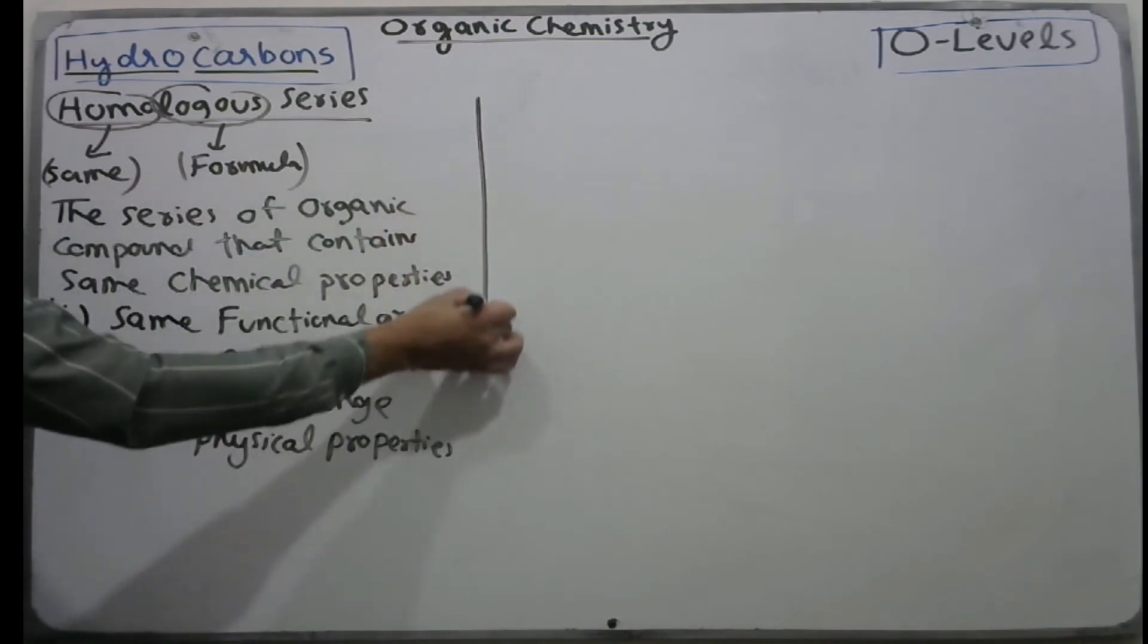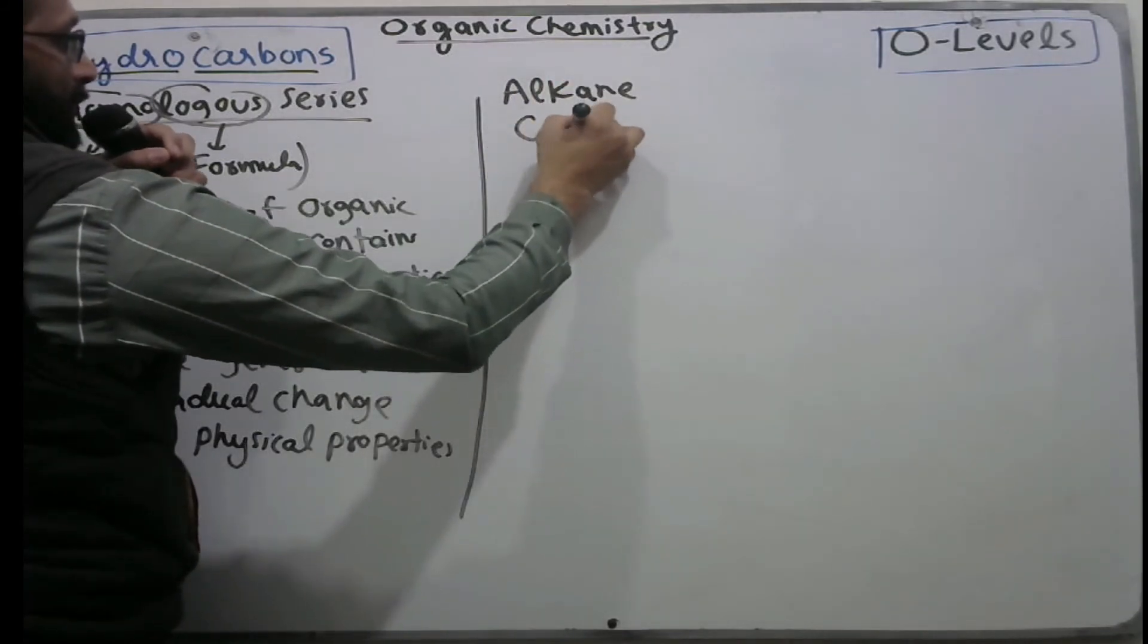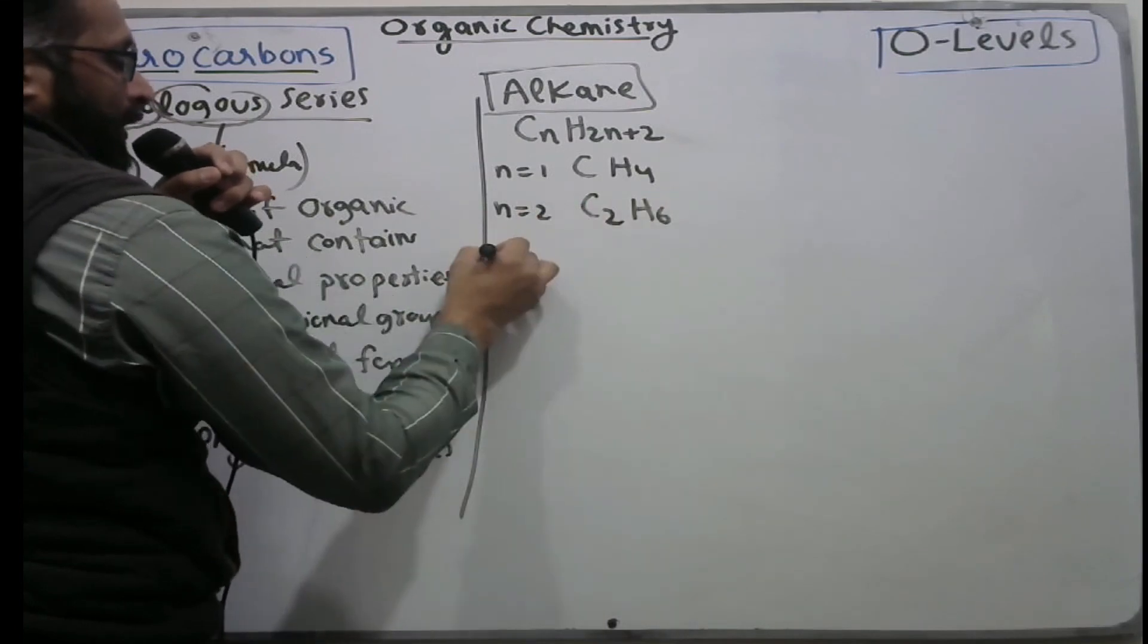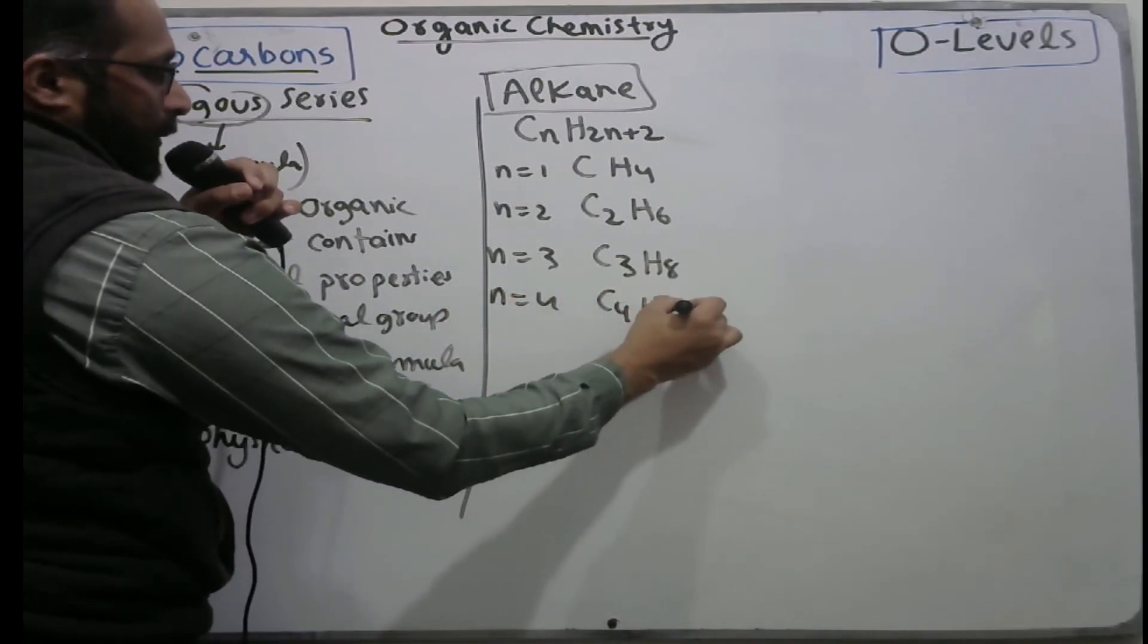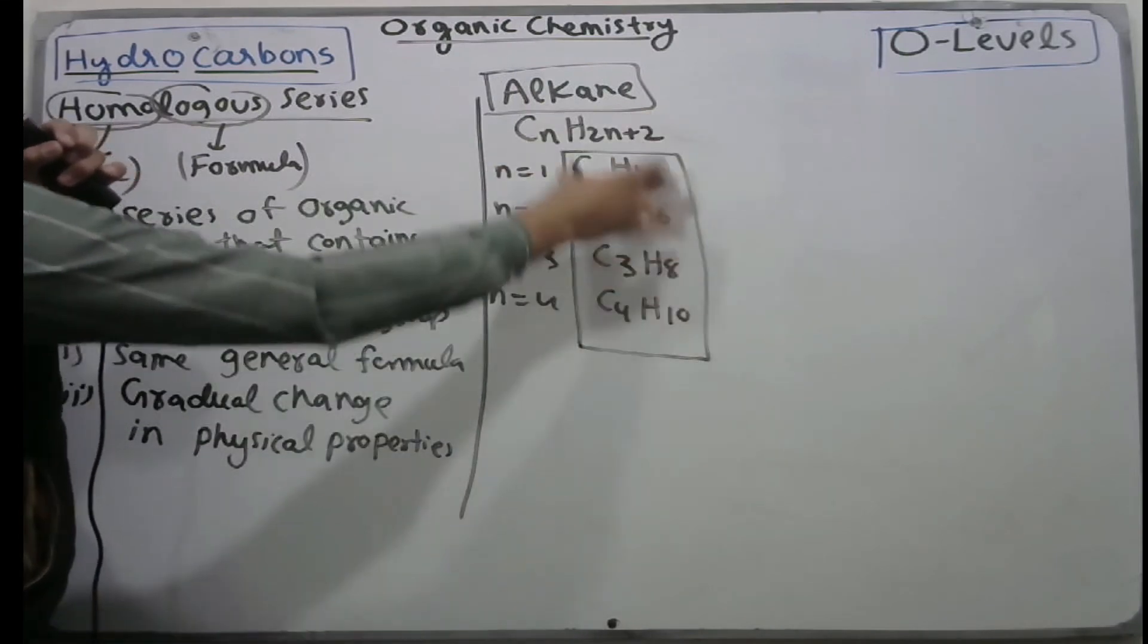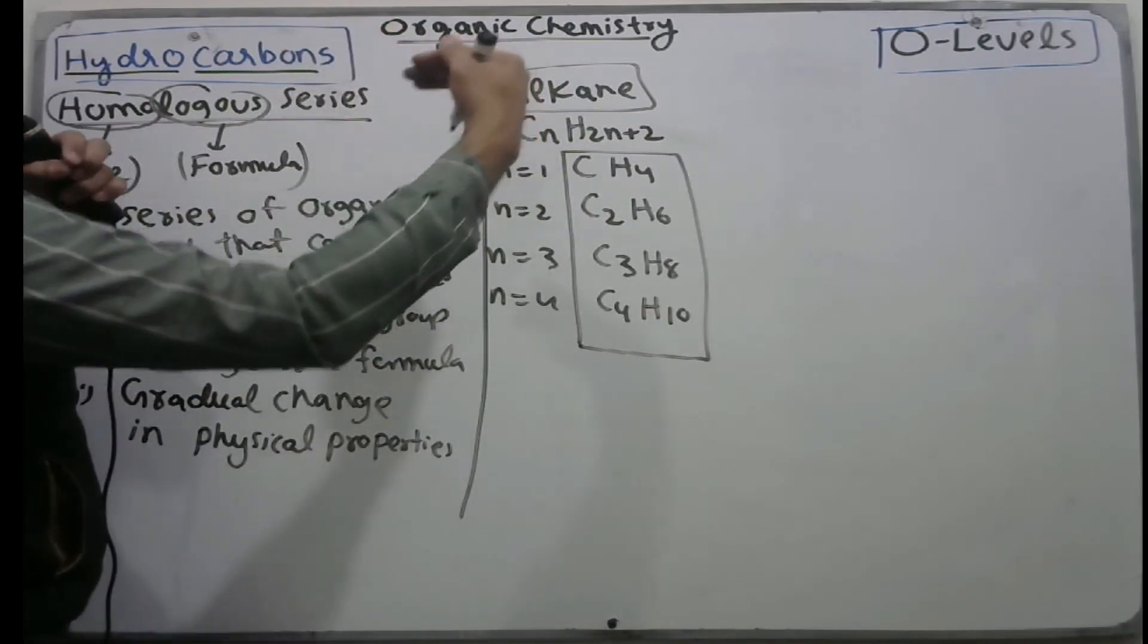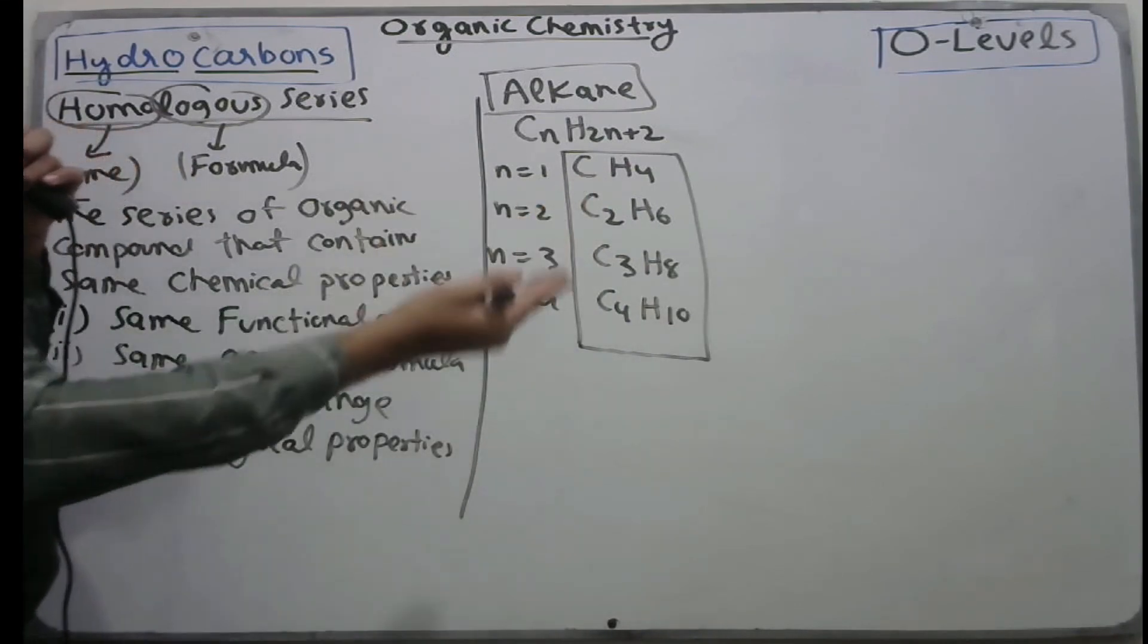Now we take examples to understand this concept. For alkanes with formula CnH2n+2, if you put n equal to one, you got CH4. If you put n equal to two, you got C2H6. If you put n equal to three, your answer is C3H8. As you increase n, your formula changes, but this is the homologous series for alkanes. All these combined are called the alkanes homologous series. All have the same chemical properties, same general formula, but boiling point, melting point, and viscosity gradually change because atoms increase and molecules become bigger.